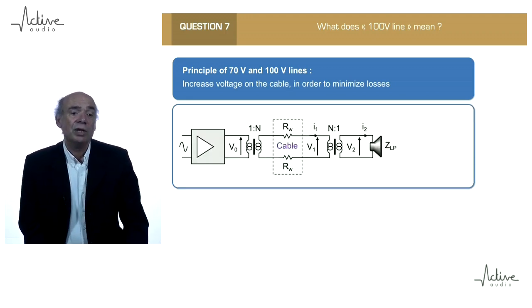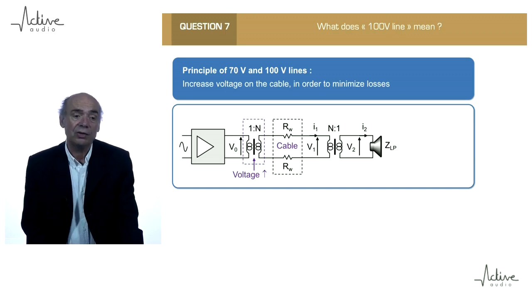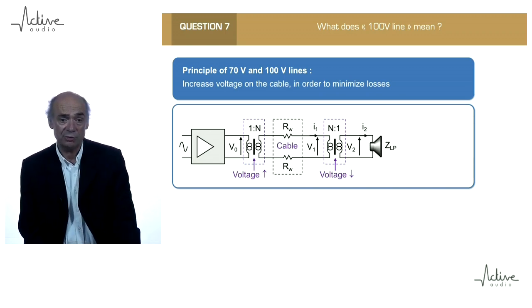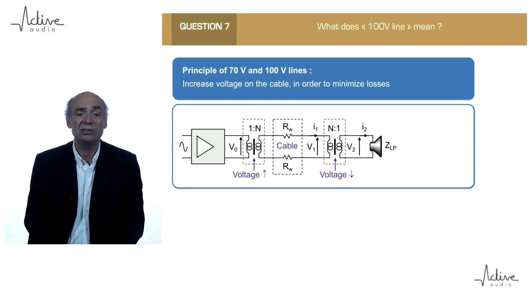So, we add one transformer on the amplifier side, which increases the voltage, and the complementary transformer on the other end of the cable, at the loudspeaker side, which decreases the voltage.